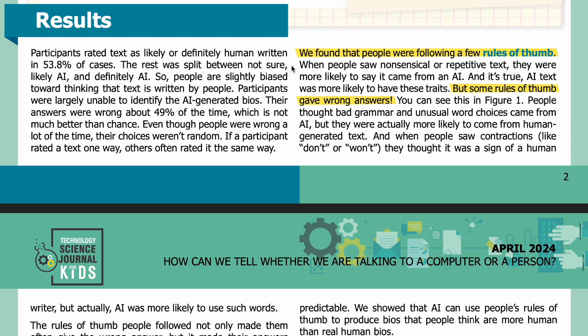Results: Participants rated text as 'likely' or 'definitely human-written' in 53.8% of cases. The rest was split between 'not sure,' 'likely AI,' and 'definitely AI.' So people are slightly biased toward thinking that text is written by people. Participants were largely unable to identify AI-generated bios — their answers were wrong about 49% of the time, which is not much better than chance.